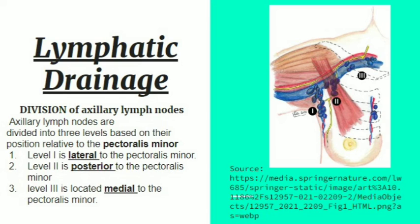The axillary lymph nodes are divided into three levels based on their position relative to the pectoralis minor. Level one is lateral to the pectoralis minor, level two is posterior to the pectoralis minor, and level three is medial to the pectoralis minor. Level one is the lowest, level three is the highest, and level two is in between, as seen in the figure.